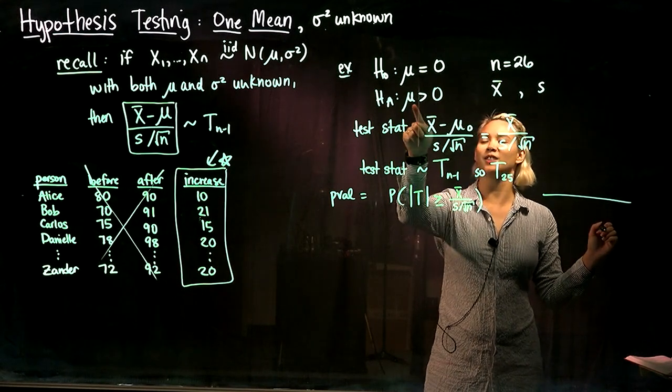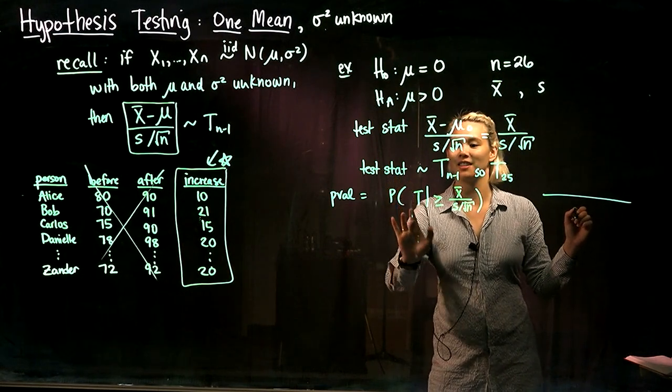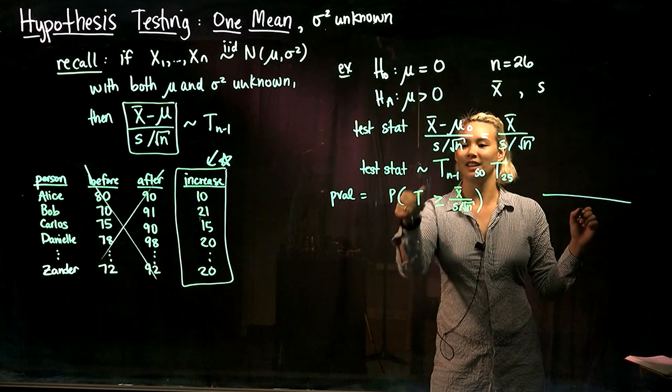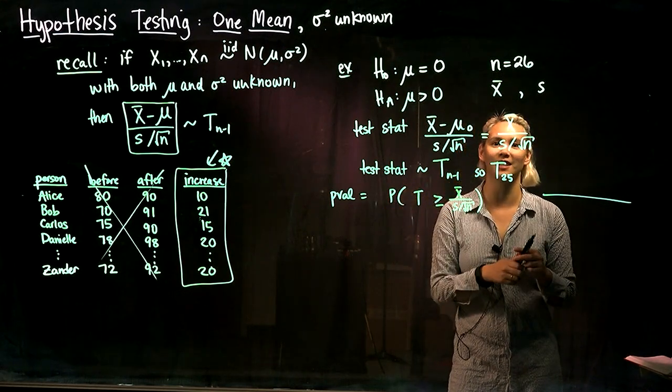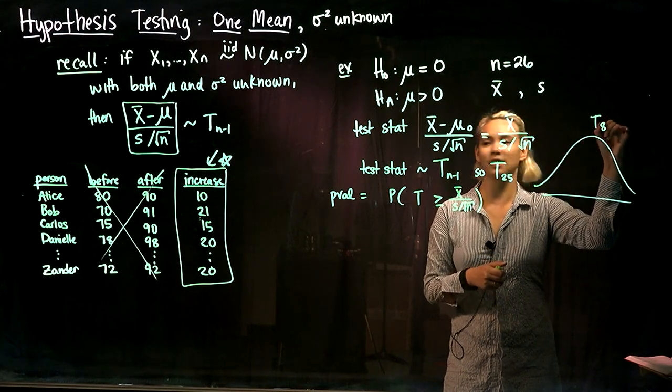So then our p-value would be... actually, since the alternative is μ is greater than zero, we're just going to look at the probability that our test statistic is greater than or equal to our particular test statistic.